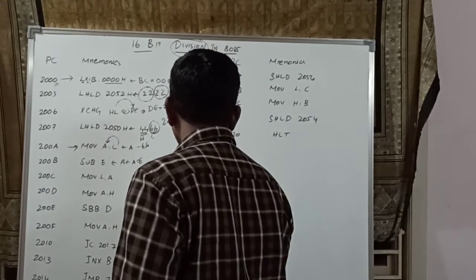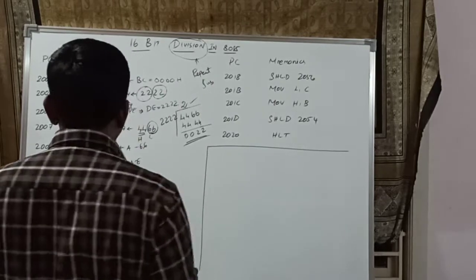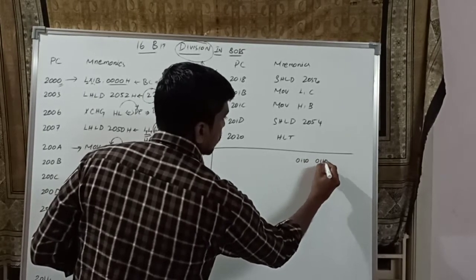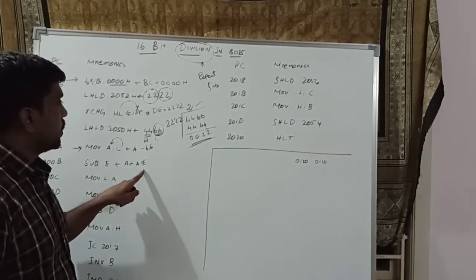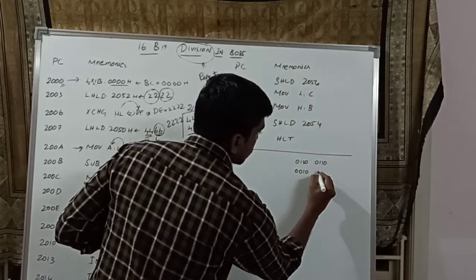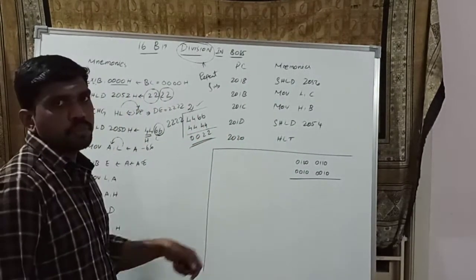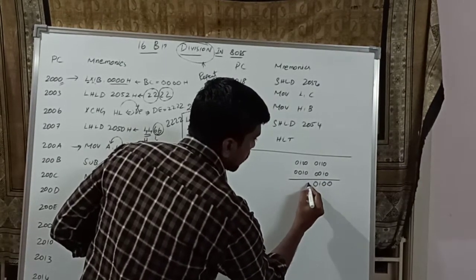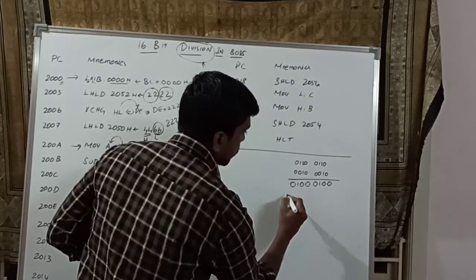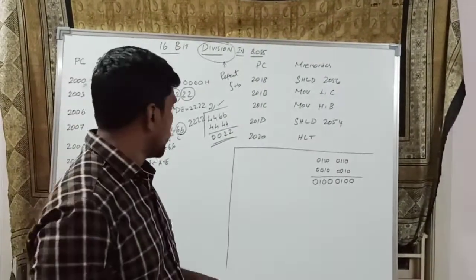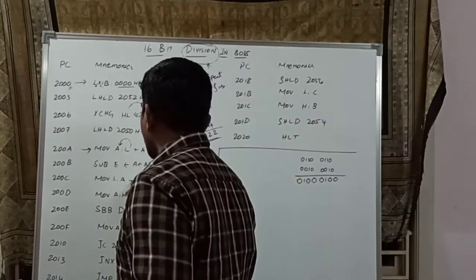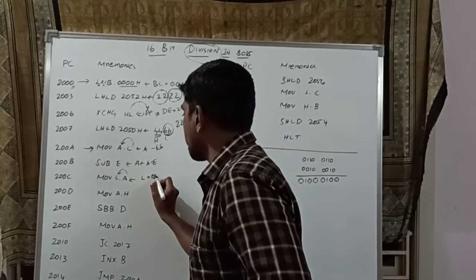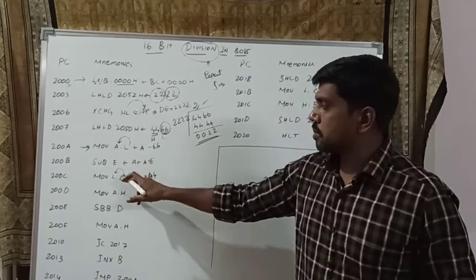Just applying the manual calculation: write the binary number for A (66H) and for E (22H). After subtraction, you get the result 44H. So this 44H is moved to L register. The next instruction is MOV L, A — whatever value is present in the accumulator, that content is transferred to L register. After execution, L register value is 44H.